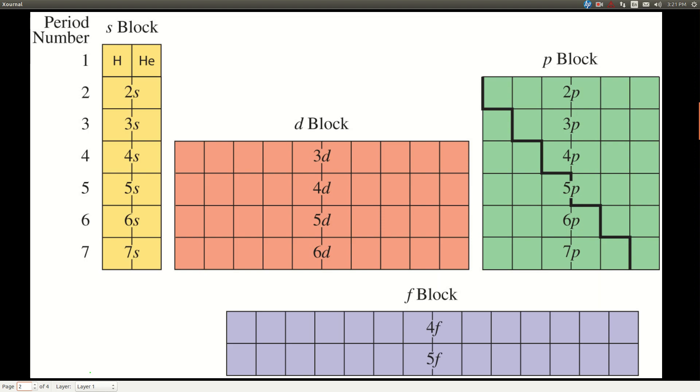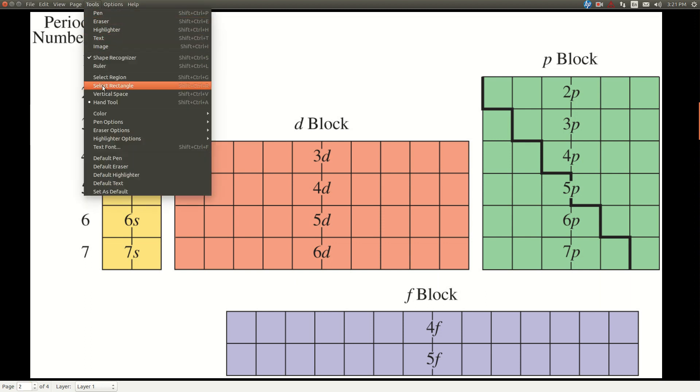So this is a breakdown of the periodic table, and we have the S block, the P block, the D block, and the F block.